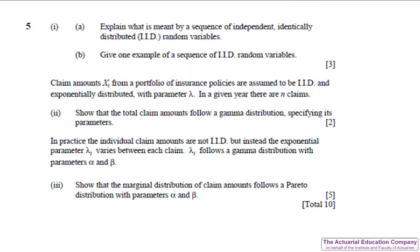Question five on the paper was an interesting mixture of CT3 and chapter three of the notes. Part one asks us to explain what is meant by a sequence of independent and identically distributed random variables. No marks for saying they need to be independent, or saying that they need to be identically distributed. You'll have to use words to explain what independent and identical actually mean.